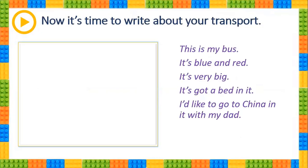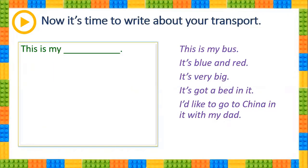Here we have again some information about the transport. It's time to write about your transport. After taking our notes, now let's write about our transport. First word: 'This is my...' — what? You write from your note. Then 'It's...' — you write the colors. Let's say: this is my scooter. It's red and white.